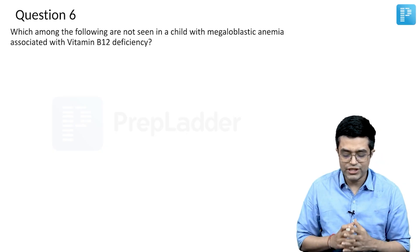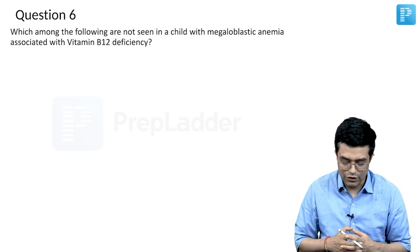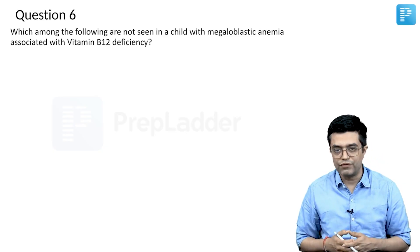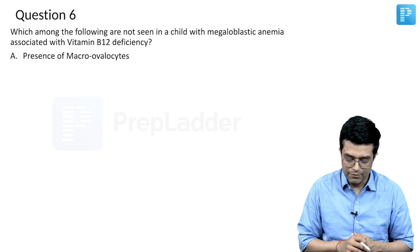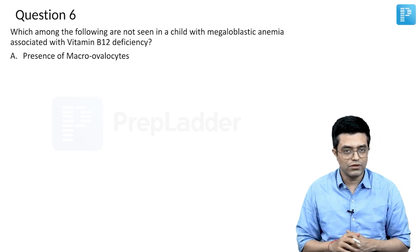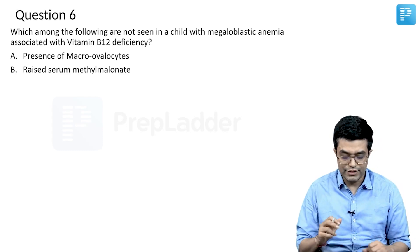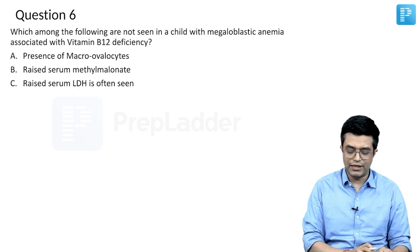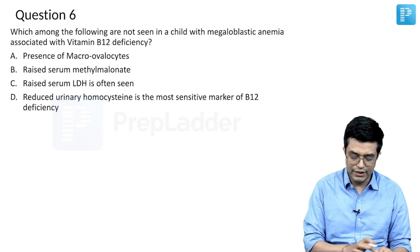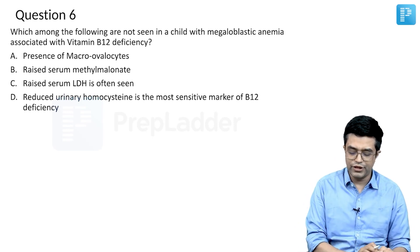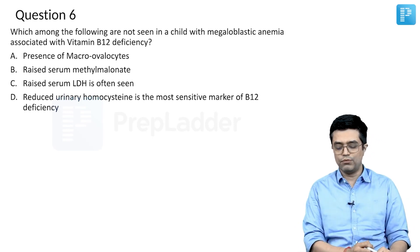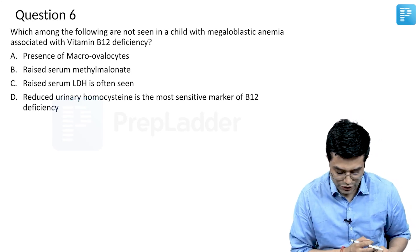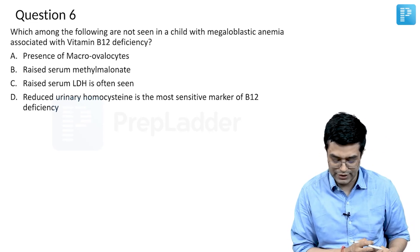Which among the following are NOT seen in a child with megaloblastic anemia associated with B12 deficiency? Options: presence of macro-ovulocytes, raised serum methylmalonate, raised serum LDH is often seen, and reduced urinary homocysteine is the most sensitive marker of B12 deficiency.